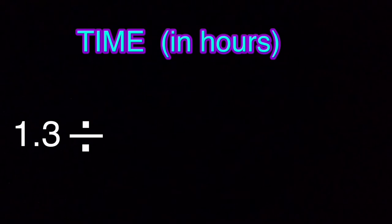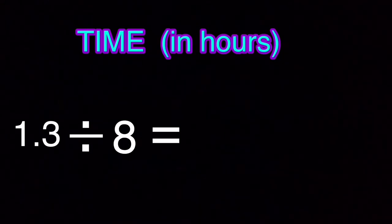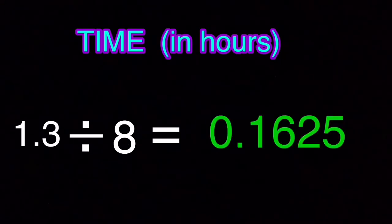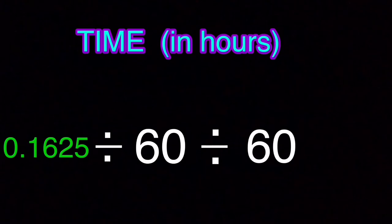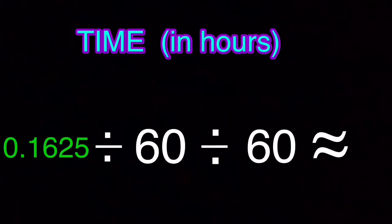Using slow-mo and the stopwatch, I got 1.3 seconds. Now I divided that by 8 and I got 0.1625. Now you need to find how many hours is 0.1625. To find that, you divide 0.1625 by 60, because there's 60 seconds in a minute, and then divide that by 60 again, because there are 60 minutes in an hour. Your answer should be about 0.00004513.